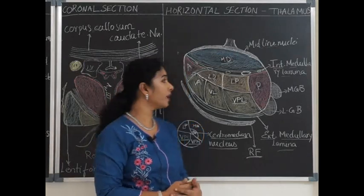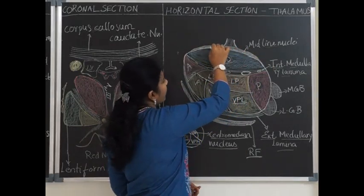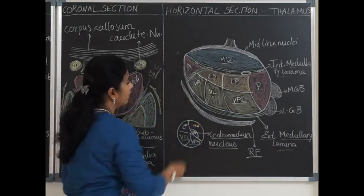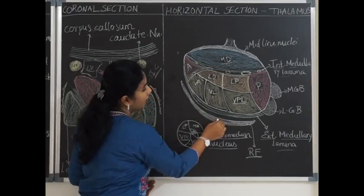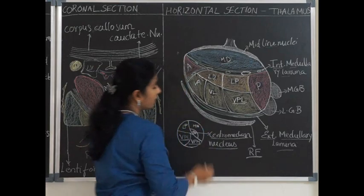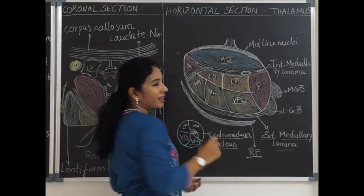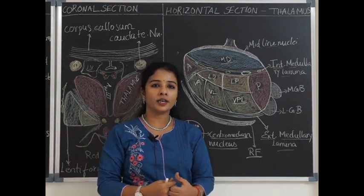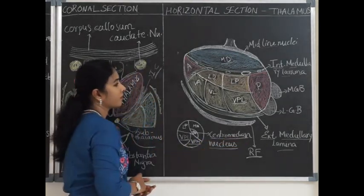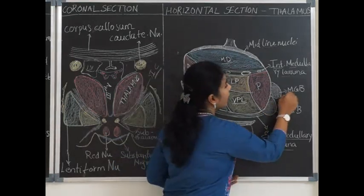Other gray matter present within the thalamus includes midline nuclei along the medial surface, lined by the ependyma of the third ventricle. The interthalamic adhesion connects the two thalami. Laterally there is a layer of gray matter separated from the thalamus by white matter called the external medullary lamina, and that gray matter is the reticular formation. Within the internal medullary lamina are collections called intralaminar nuclei, one of which is the larger centromedian nucleus. At the posterior end, the pulvinar overhangs the medial and lateral geniculate bodies.